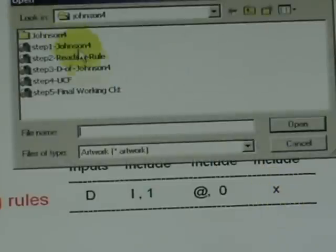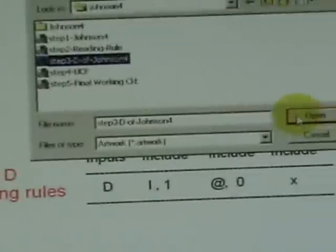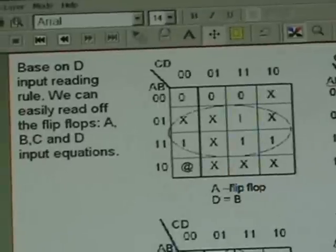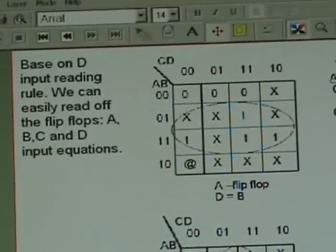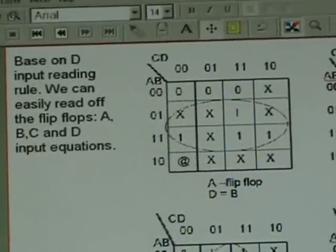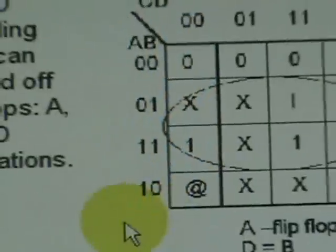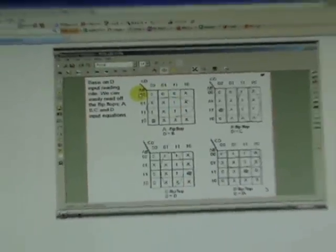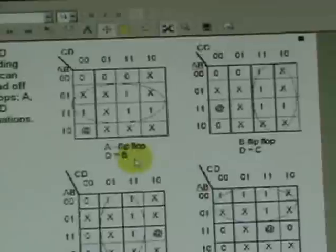The third step is to derive for our 4-bit Johnson counter the required data input based on the two tables we have presented. It is very easy to fill this four-variable Karnaugh map for each of the data inputs of the four flip-flops.